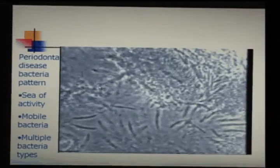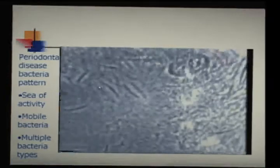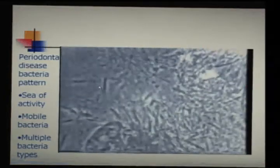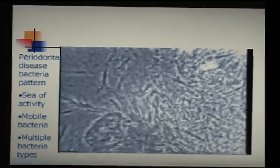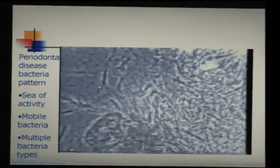Periodontal disease is made up of mobile bacteria and many types. There's probably over five to six hundred different kinds of bacteria in the mouth, and it's very difficult to discern which ones are the virulent or important bacteria.